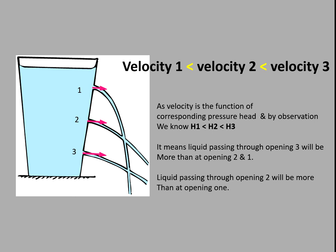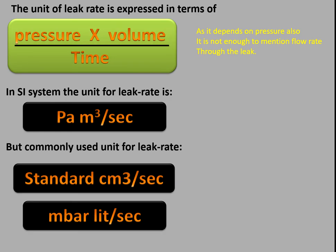This means liquid passing through opening three will be more than at opening two and one, and liquid passing through opening two will be more than at opening one. Here we are seeing liquid, but in terms of leak detection there may be liquid or gas — that is, fluid.